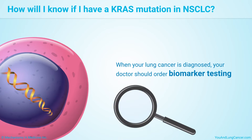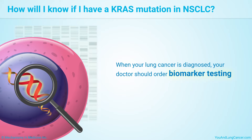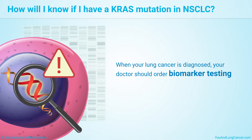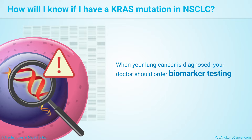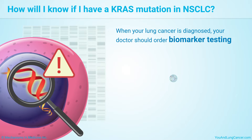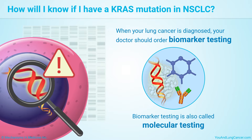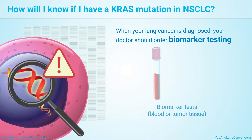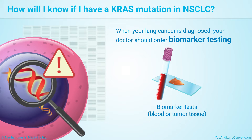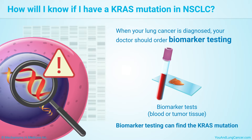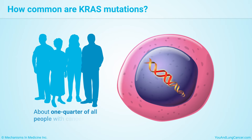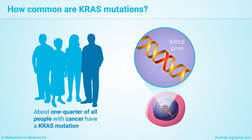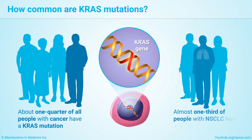When your lung cancer is diagnosed, your doctor should order biomarker testing. If you are not certain this has been done, ask your doctor. Biomarker testing is also called molecular testing. It looks at a sample of blood or tumor tissue for mutations in your genes and other information about the cancer. Biomarker testing can find the KRAS mutation. About one-quarter of all people with cancer have a KRAS mutation, and almost one-third of people with non-small cell lung cancer do.